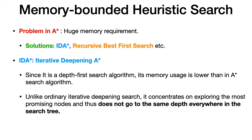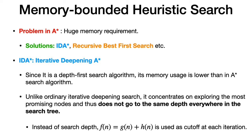In iterative deepening depth-first search, we continuously iterate traversal from the starting node to the goal node for various depth limits, gradually increasing the depth limit to get various traversals. Similarly, in IDA* we do the same thing, but the only change is we don't fix the depth limit.